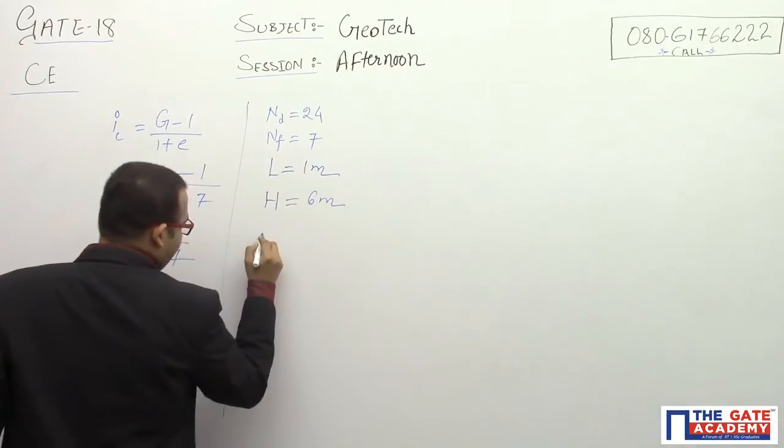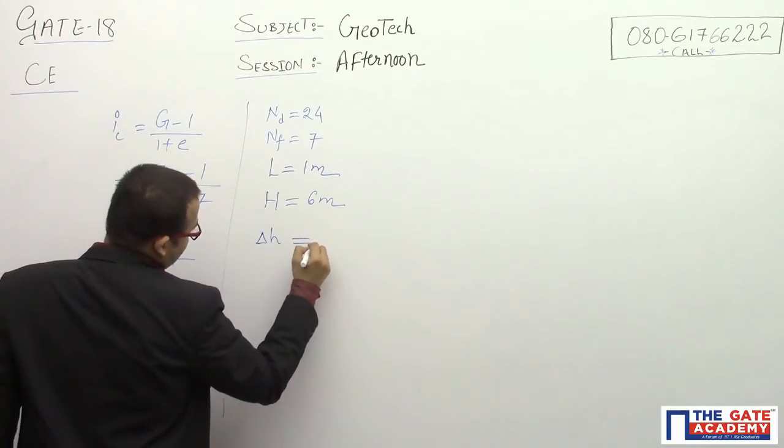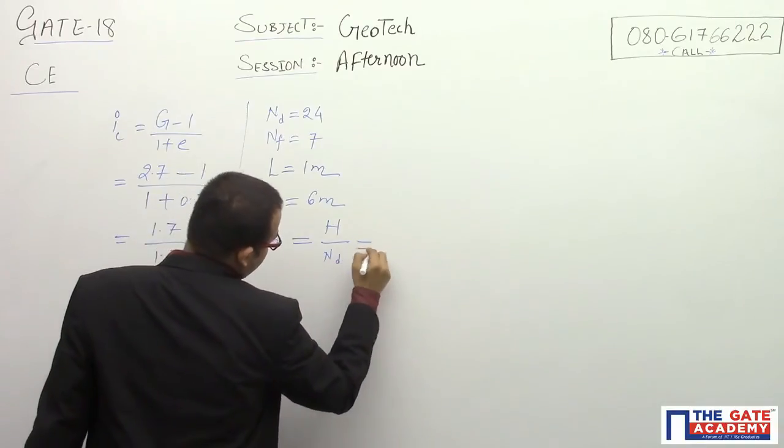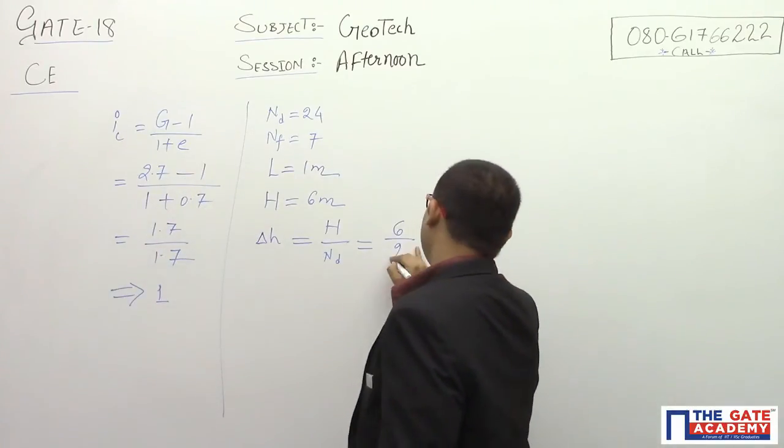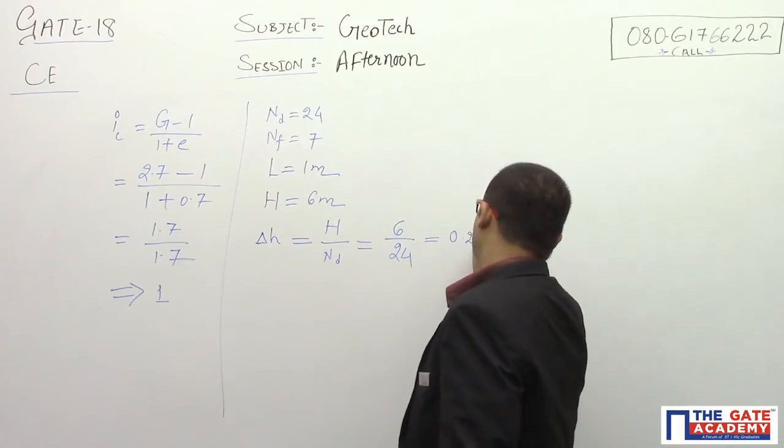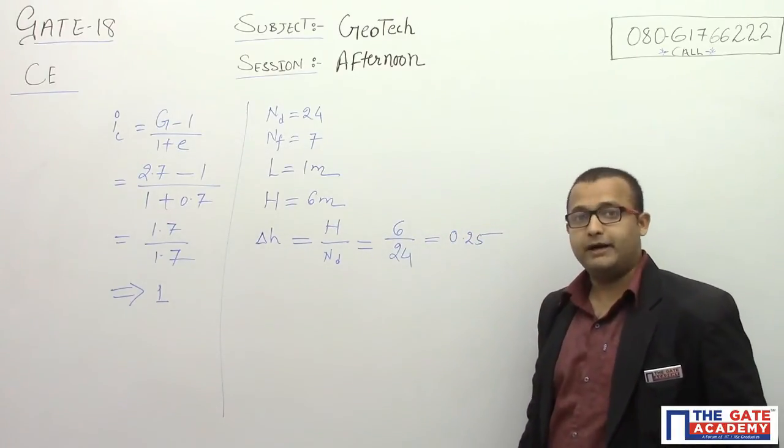So that I am going to denote by small delta H equals total head loss divided by number of drops: 6 divided by 24, which equals 0.25. This is the head loss per drop.